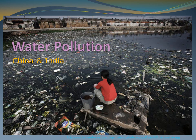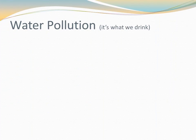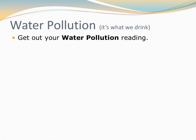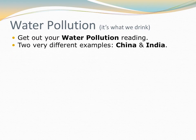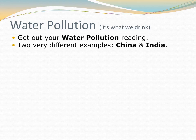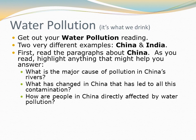Our next topic is water pollution, and we're going to be looking at China and India. The water pollution in both those places actually comes from some very different causes. In China, we're again looking at economic progress. But we're going to see some different causes for the pollution in India. Water pollution affects people directly because people drink water — we need that water. Get out your water pollution reading. We're going to do this reading in two pieces: first the China section, then the India part, and we'll follow up with questions as we finish each part.